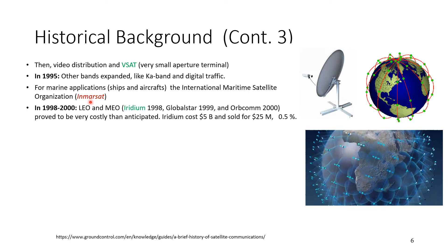In the period from 1998 to 2000, companies tried to cover the entire Earth with networks of Low Earth Orbit and Medium Earth Orbit satellites to replace mobile phone base stations. Companies including Iridium (1998), Globalstar, and others were involved. However, these proved very costly: Iridium cost five billion dollars but was sold for only 25 million — just 0.5% of the original price.